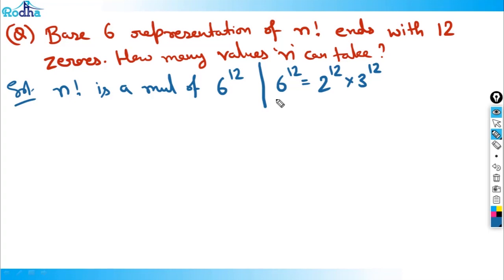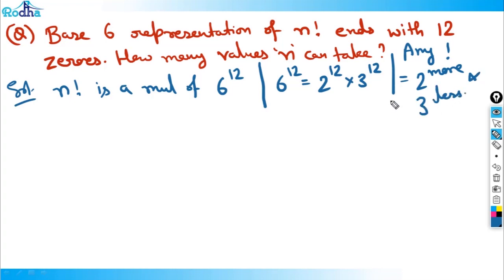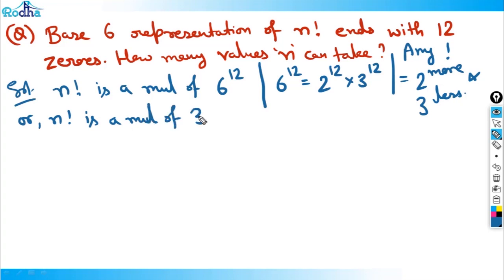In any factorial, the power of 2 is always more than the power of 3. Since 6 is made from pairing 2 and 3, the number of 6s depends on the smaller factor — which is 3. So finding the highest power of 6 in a factorial is equivalent to finding the highest power of 3. We need the factorial in which 3 raised to 12 appears.